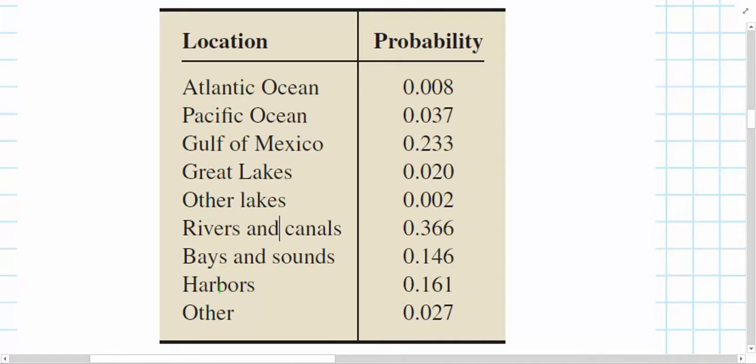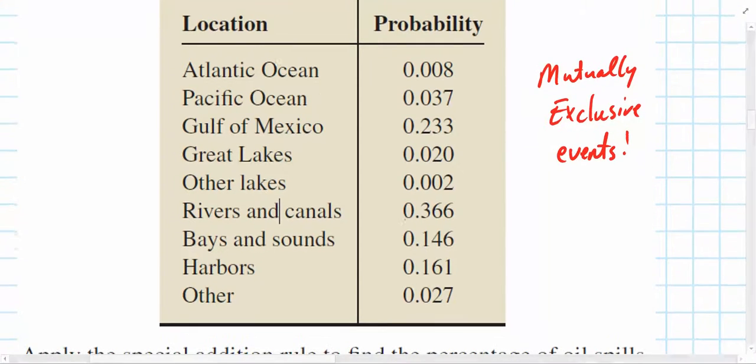So, these locations are mutually exclusive, because when an oil spill occurs, it exists in one of these locations. The actual spill itself doesn't originate in more than one location, even though it might spread to others. So, again, since these are mutually exclusive, all of these events are mutually exclusive, then we can use the special edition property, special edition rule. Let's go ahead and label these events just for clarity's sake. If the spill occurs in the Atlantic Ocean, let's call that event A, and if it happens in the Pacific Ocean, we'll call that B, and so on.